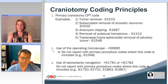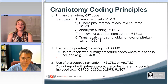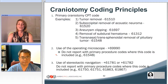The first additional code is the operating microscope, 69990. This code for the use of the operating microscope for micro dissection can be billed with all of the craniotomy codes when appropriate, with the exception of 61548 — the transsphenoidal hypophysectomy code or transnasal transsphenoidal removal of a pituitary tumor code — which already includes the microscope, so we would not separately bill 69990.